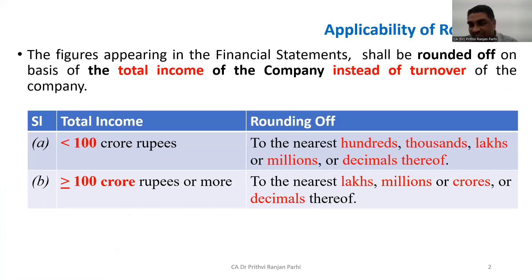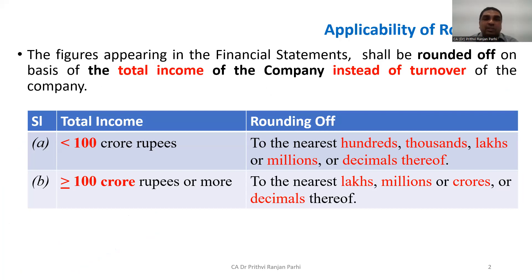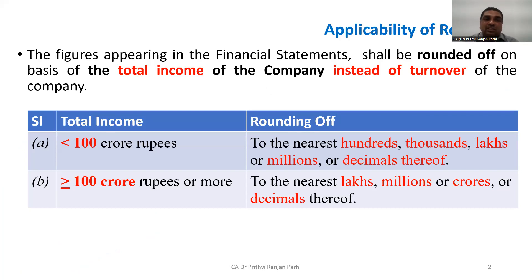Let us discuss some basic things. This slide shows that the figures appearing in the financial statement shall be rounded off. Earlier it was an optional provision — rounding was done on the basis of turnover. But now we have to round off figures on the basis of total income instead of turnover.